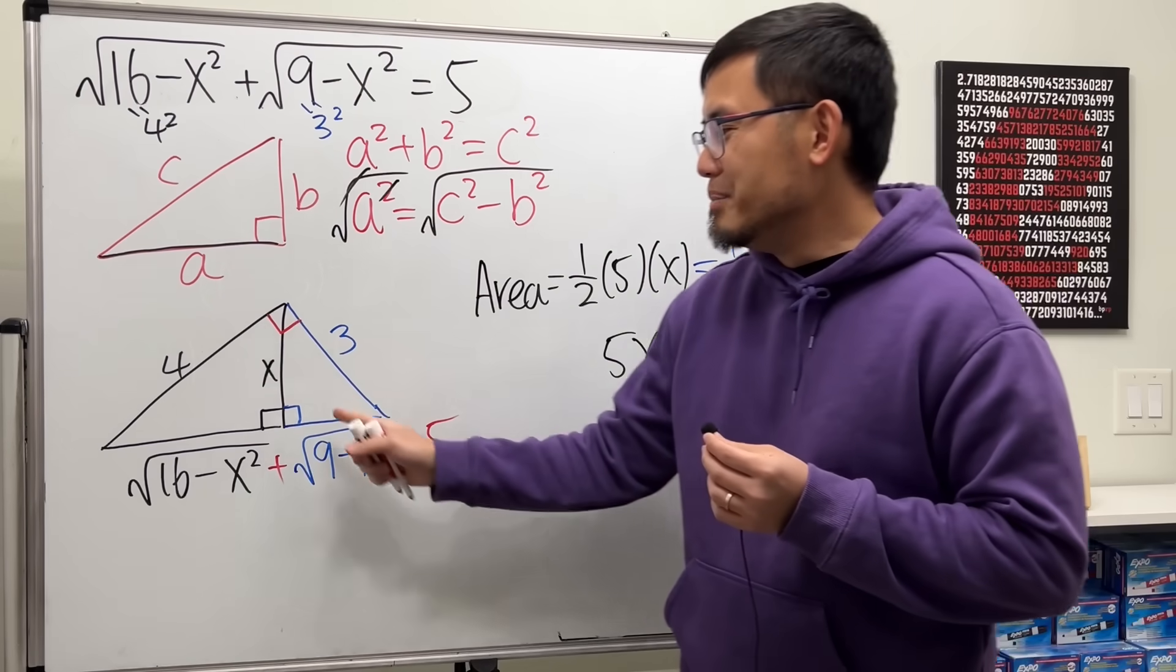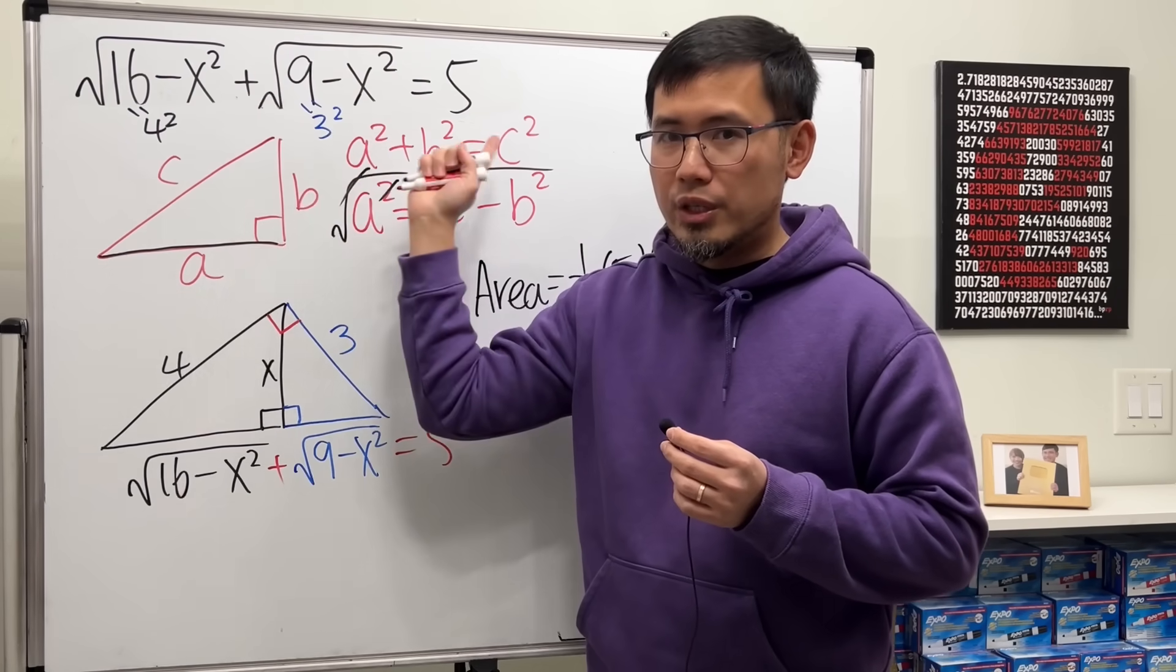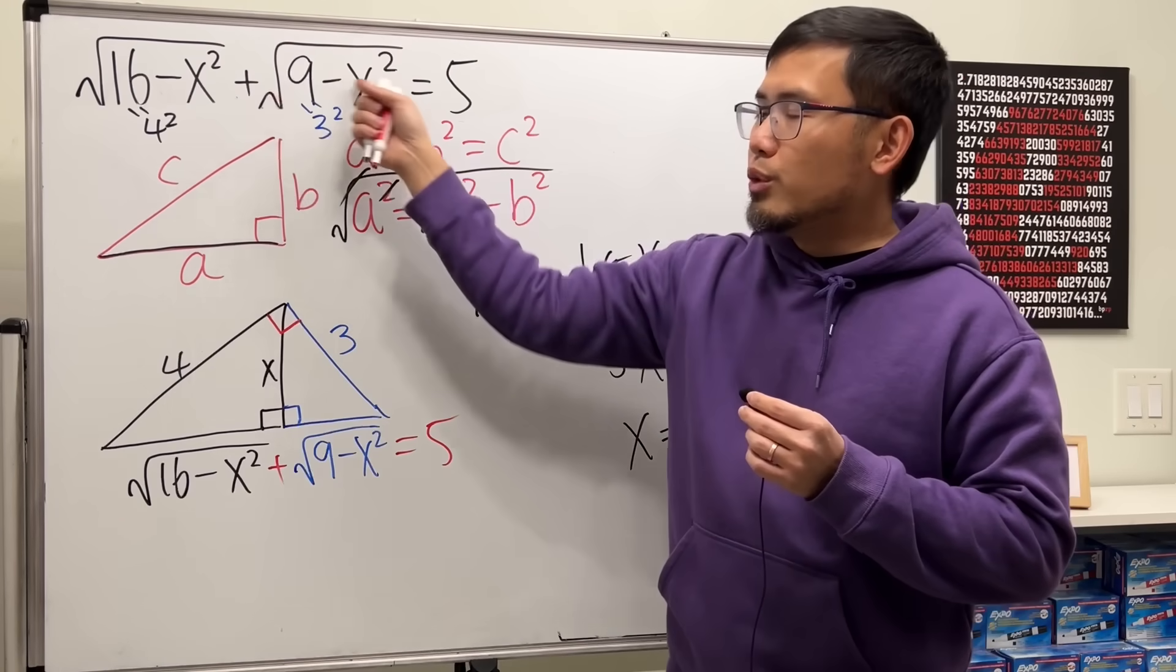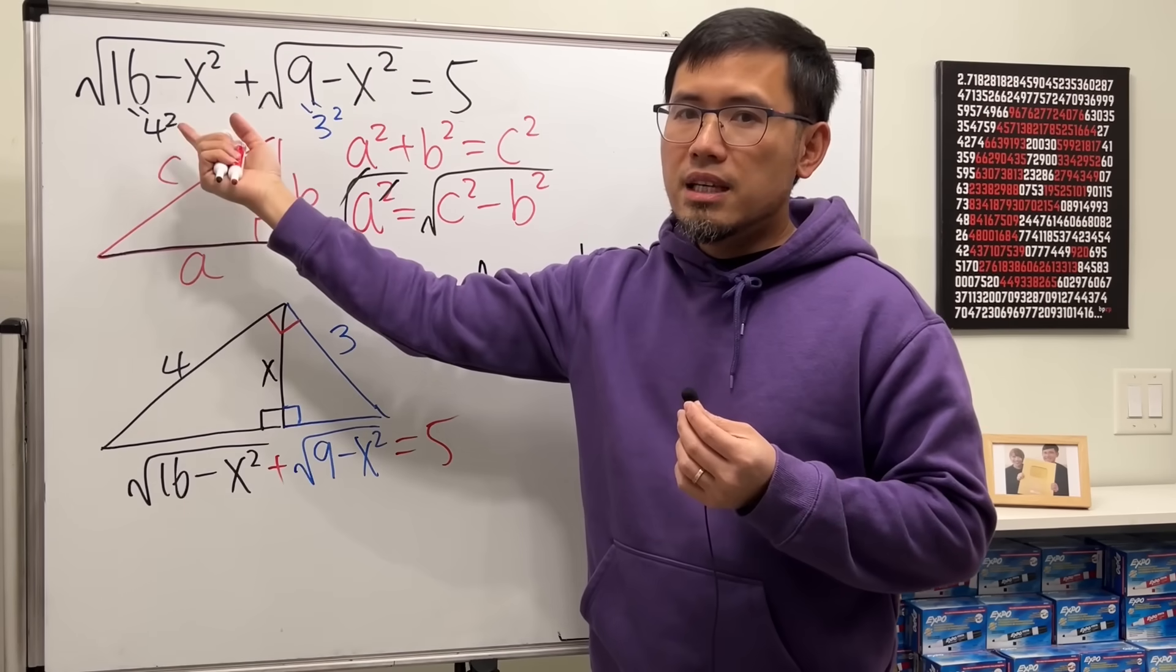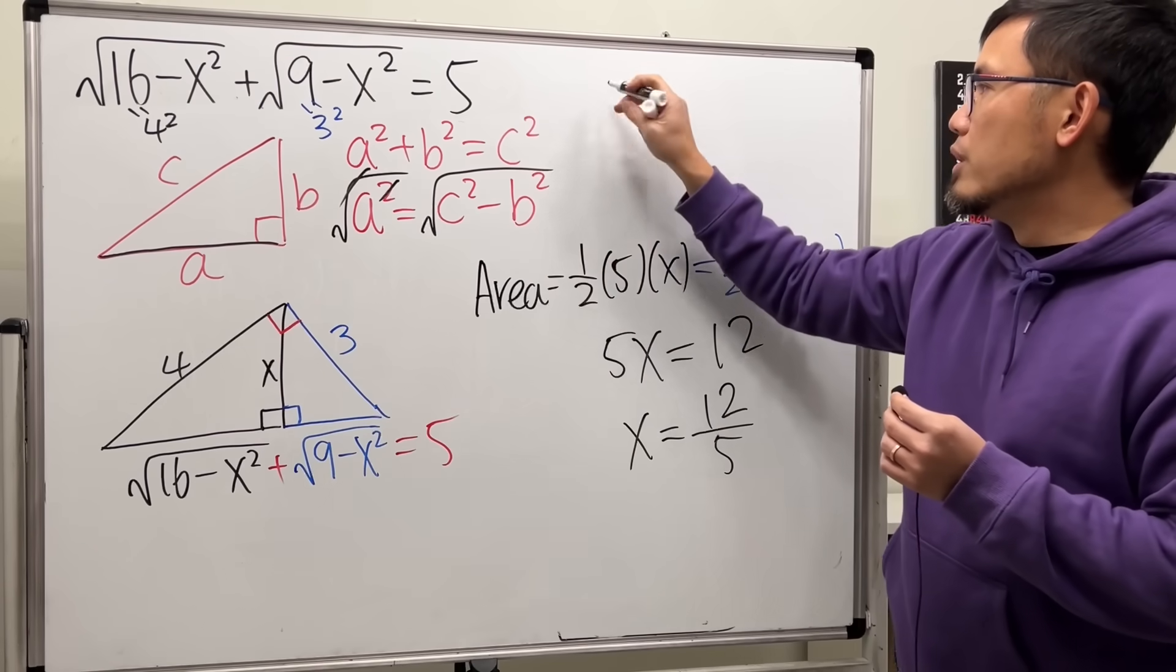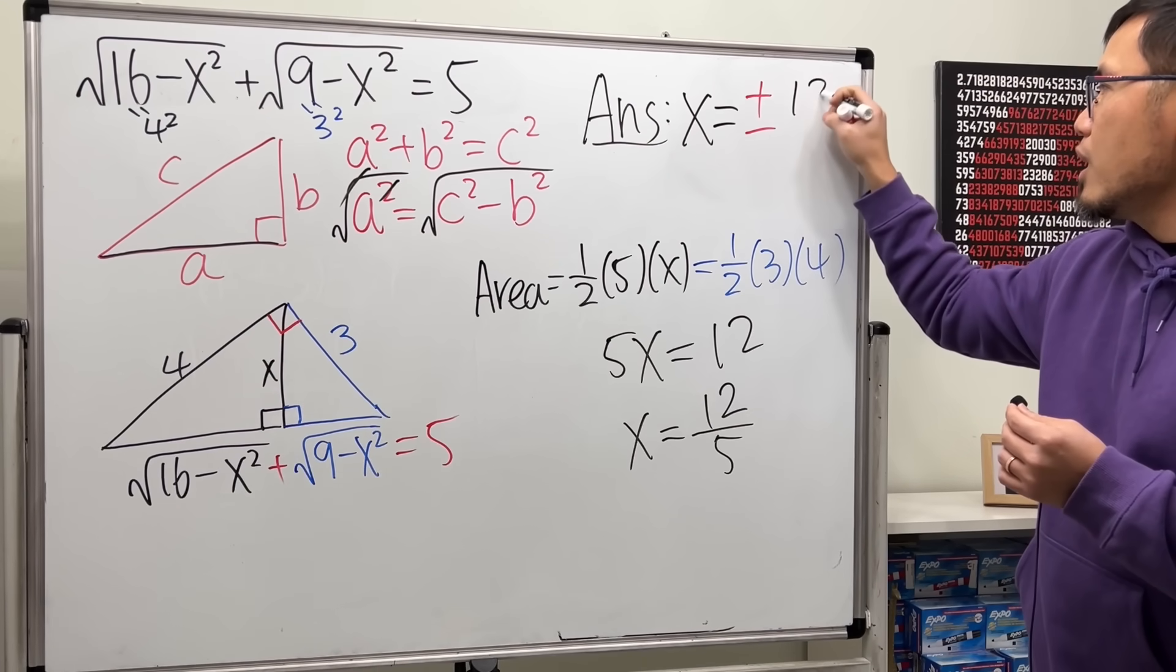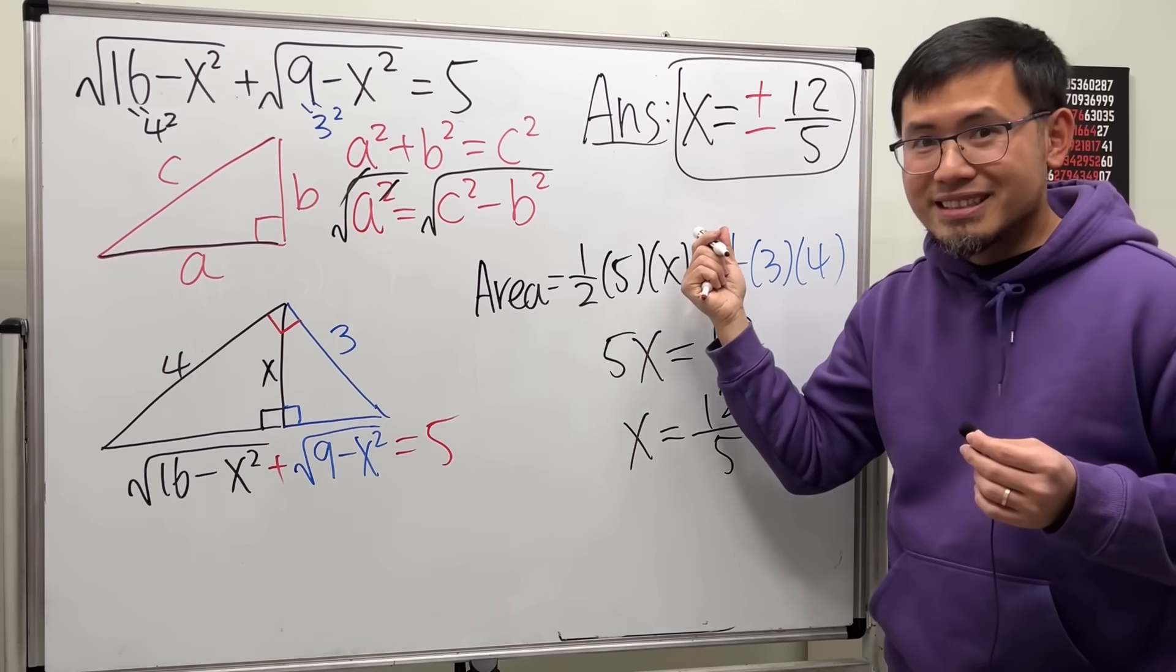Not yet, though, technically. Because we use geometry to solve this algebra equation. For geometry, the x has to be positive. But we are trying to answer this original question. And, of course, positive x and negative x will both satisfy this equation. So, the answer for this equation, x is equal to plus or minus 12 over 5. Yeah, that's it.